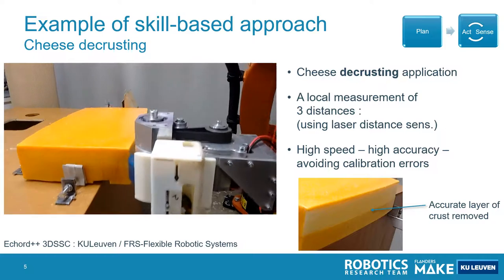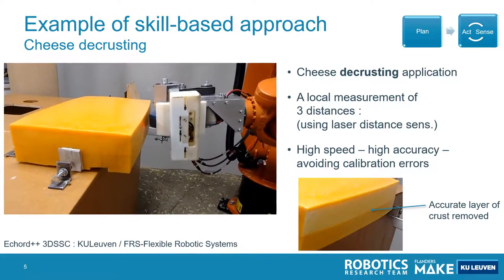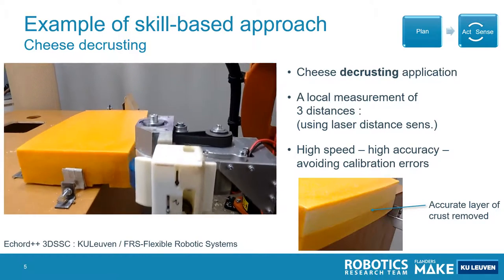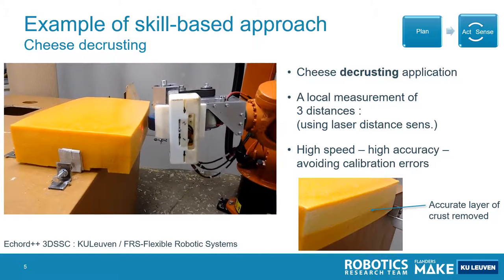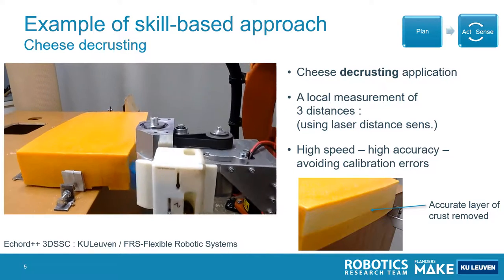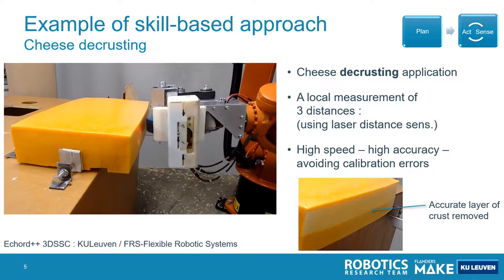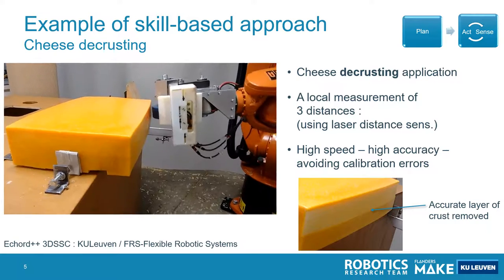In this way we can remove the cheese at high speed without having any problems with calibration errors. Only the tool itself needs to be accurate. We don't really need very accurate absolute positioning of the robot.